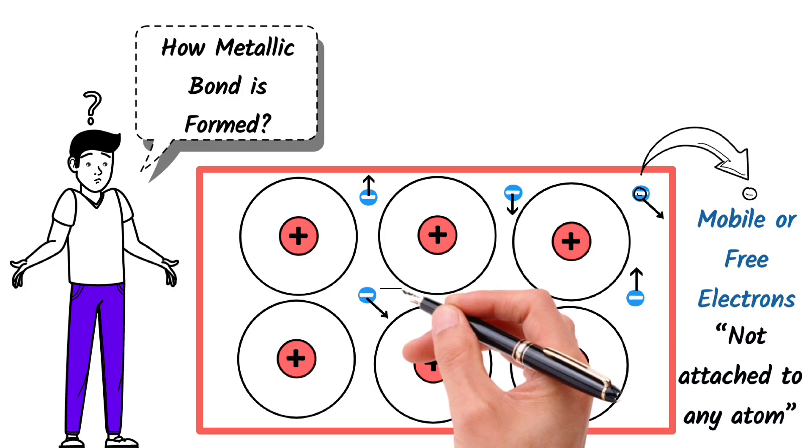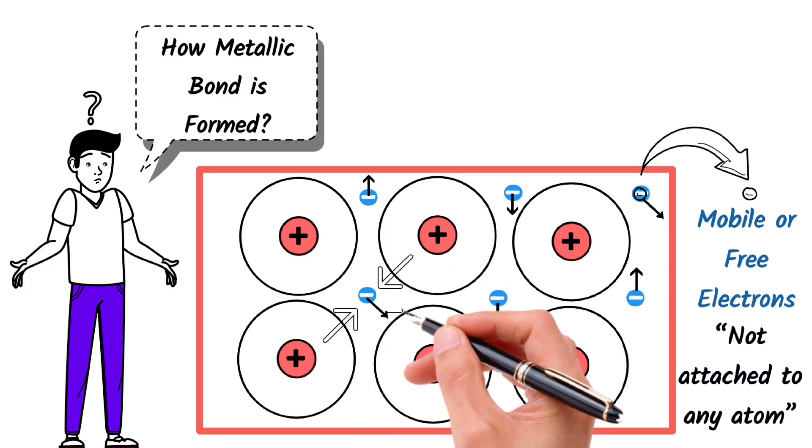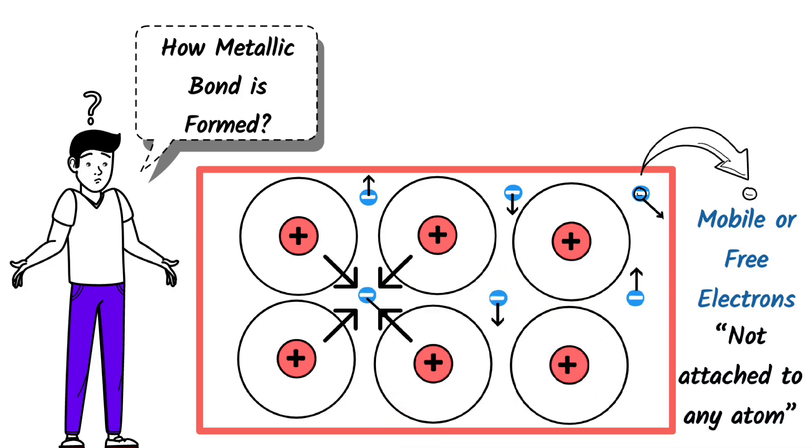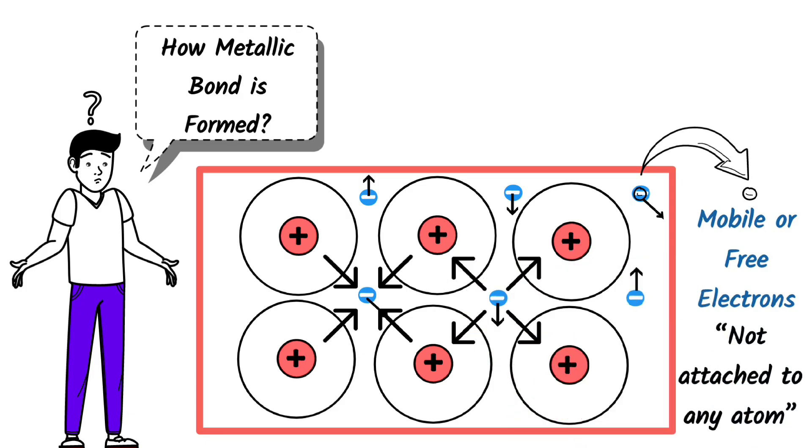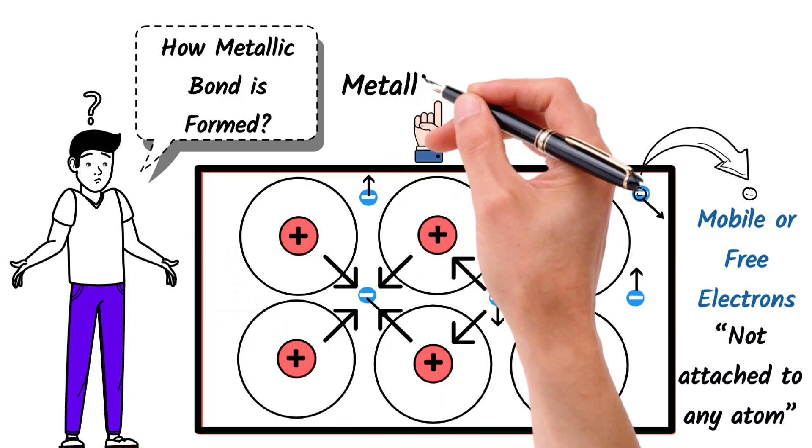These mobile electrons are attracted to all the positively charged metal ions, and positively charged ions attract all the negatively charged mobile or free electrons. These forces hold the metal atoms together, forming a metallic bond.